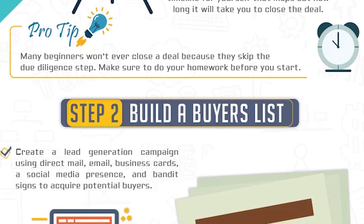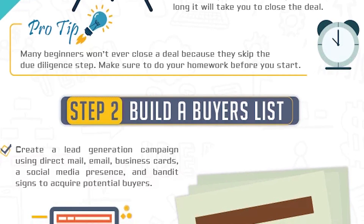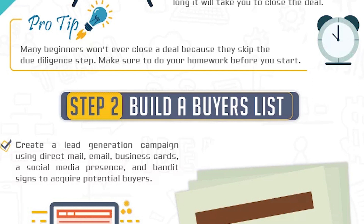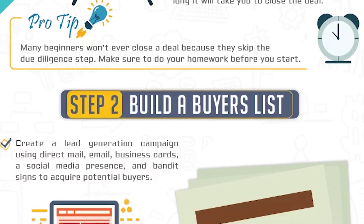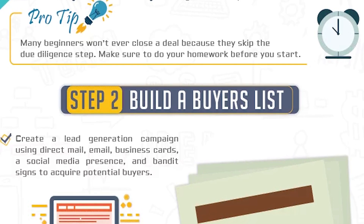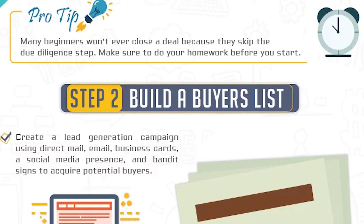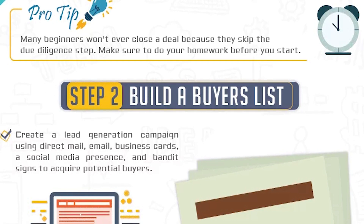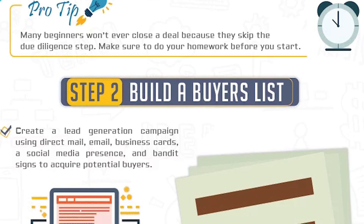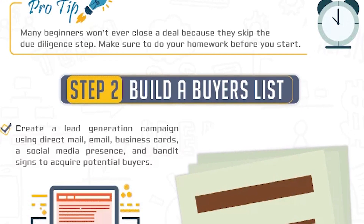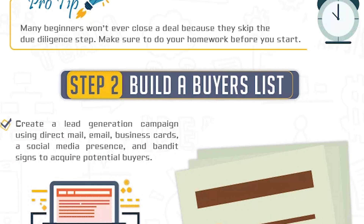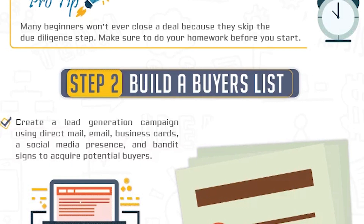A bird dog can save a wholesaler's time in finding properties because they only focus on a certain area of the business. They also have valuable connections that can assist with finding new buyers or connecting with other investors. After you have completed a few real estate deals, other means of finding distressed properties are okay to explore. Three common methods are bandit signs, mailing flyers, and working with an agent who specializes in investment properties.